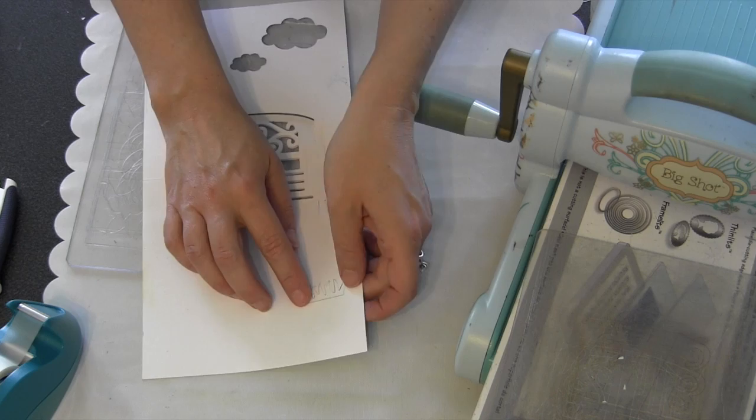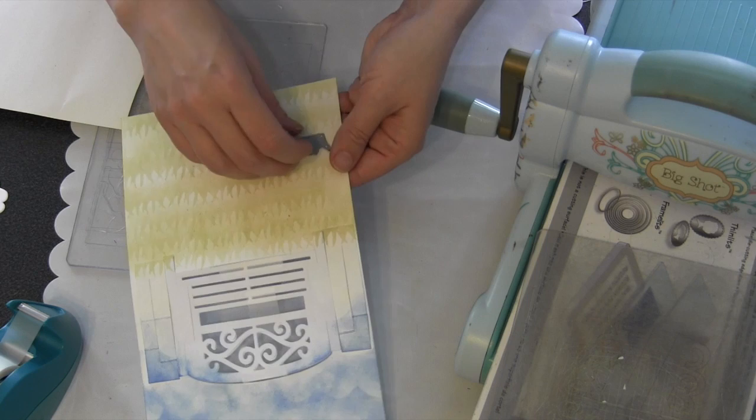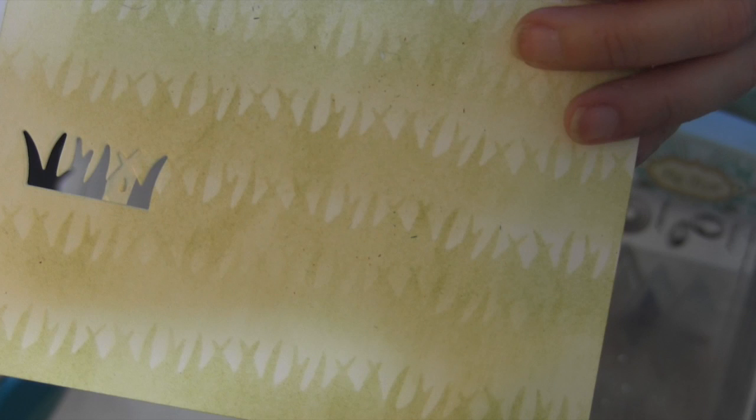I decided I wanted to inlay some grass, kind of in keeping with my little inlaid clouds. But there's something you need to do if you're going to do this. There is a little hole in the center of the grass that I want to stay connected to the card because I want that to be my grass color. What I do is I just add a little double-sided adhesive behind the paper over the hole area before I take the die and the little grass piece out. I'll capture that tiny little hole and leave it connected to the adhesive.